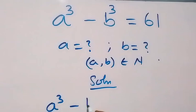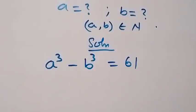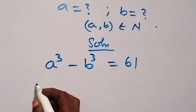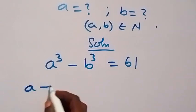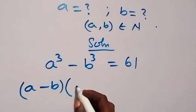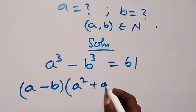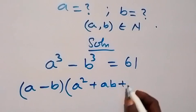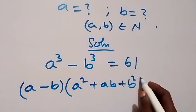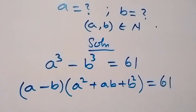What is given is a raised to power 3 minus b raised to power 3 equals 61. On the left hand side, applying the difference of cubes identity, this becomes a minus b, multiplied by the bracket a squared plus ab plus b squared, equals 61.